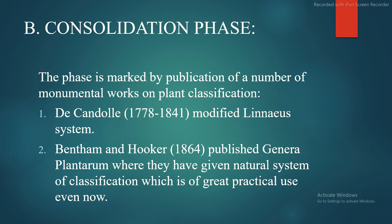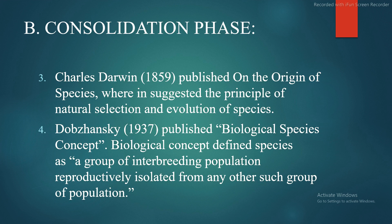Second is the consolidation phase. This phase is marked by publication of monumental works on plant classification. De Candolle (1778–1841) modified the Linnaean system. Bentham and Hooker (1864) published Genera Plantarum, giving a natural system of classification that is of great practical use even now. Charles Darwin (1859) published On the Origin of Species, suggesting the principle of natural selection and evolution. Dobzhansky (1937) published the biological species concept.